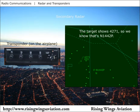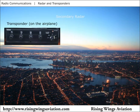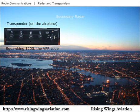If on a VFR flight, when air traffic control has not assigned you a specific transponder code, set your transponder to code 1200. Code 1200 is the standard code used by all VFR aircraft not assigned a specific code. Since this code is used by VFR aircraft, an air traffic control instruction to "squawk VFR" is an instruction for you to set your transponder to code 1200.